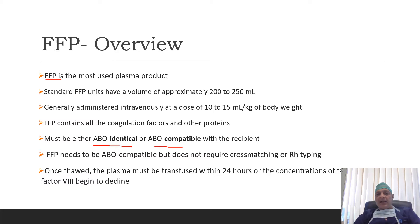In case of ABO identical, it means it should have the same group as the recipient, and in case of ABO compatible, it should have AB blood group. If the plasma is ABO compatible, it will not require cross-matching or Rh typing. The plasma must be transfused within 24 hours, else the concentration of factor VIII or factor V will begin to decline.